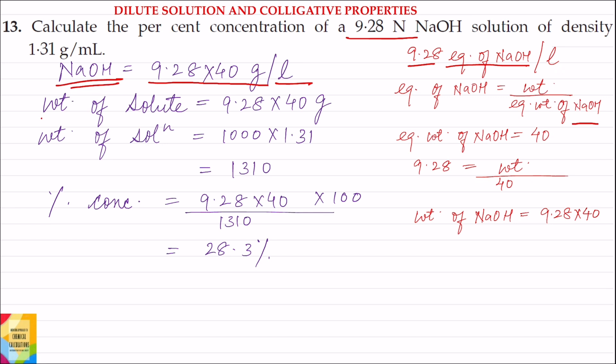So weight of solute, that is NaOH in the solution, is 9.28 into 40 grams. Volume of solution given hai, that is 1 liter. Now 1 liter is equal to 1000 milliliter. And density of solution given hai 1.31 gram per milliliter.